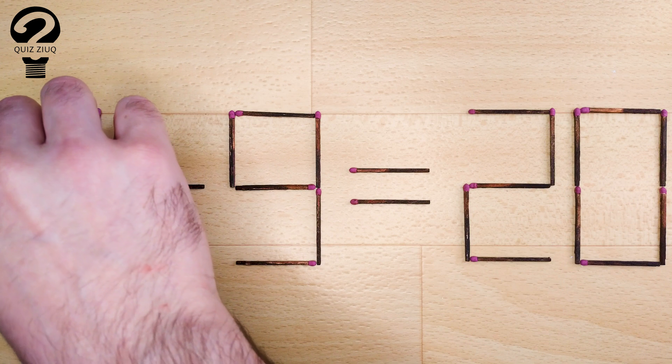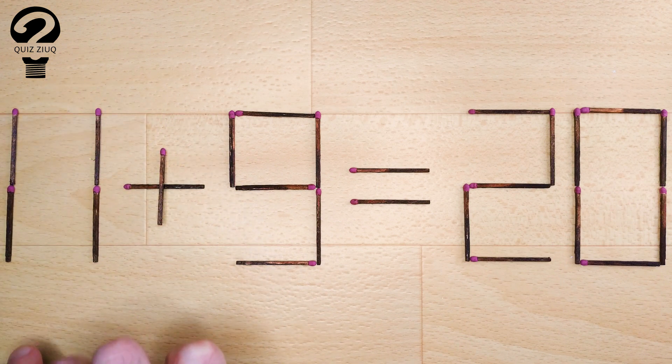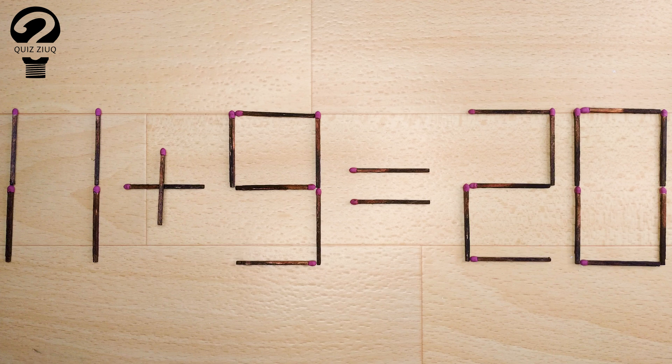And now, when we check, 11 plus 9 equals 20. 20 equals 20. Our equation is correct. The task is completed. The puzzle is solved.